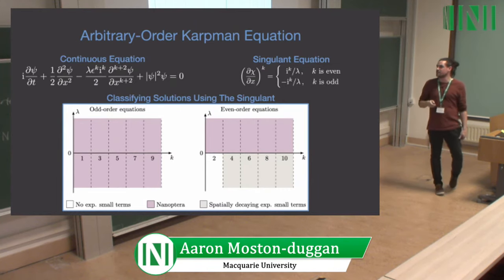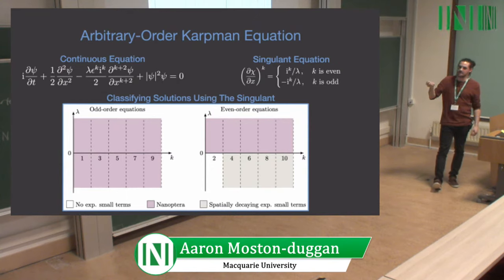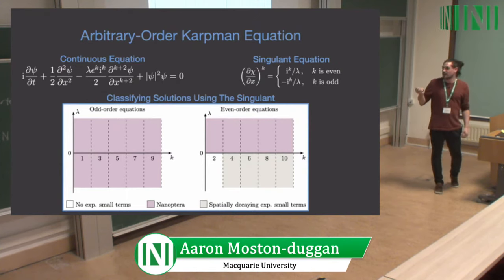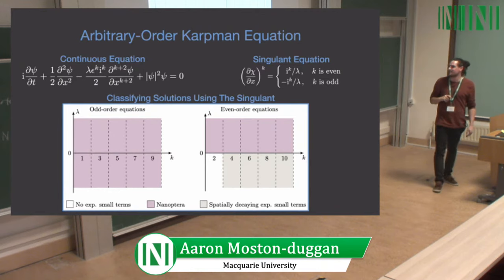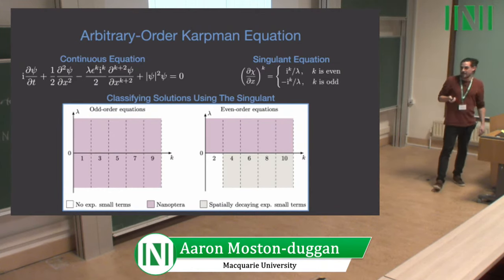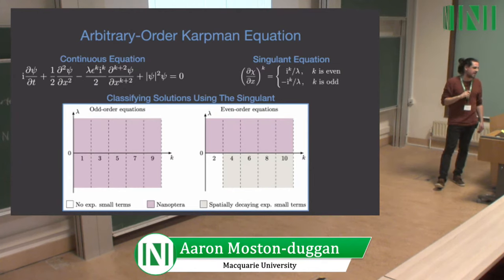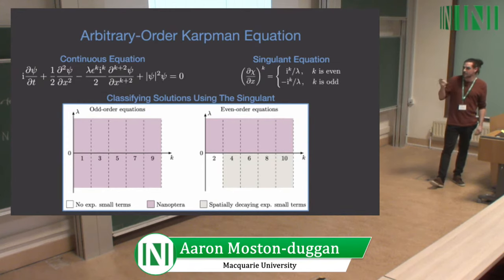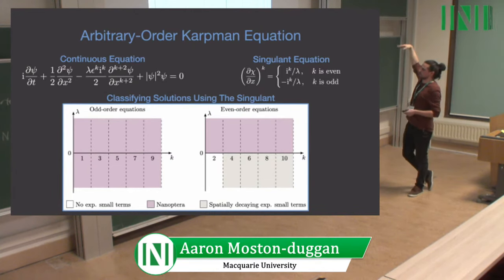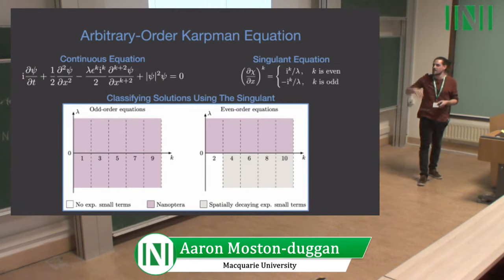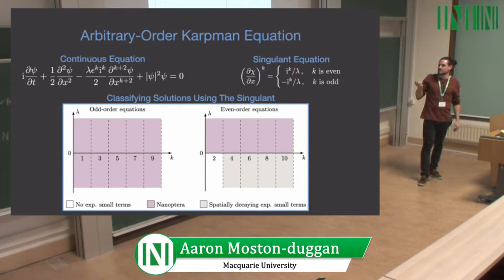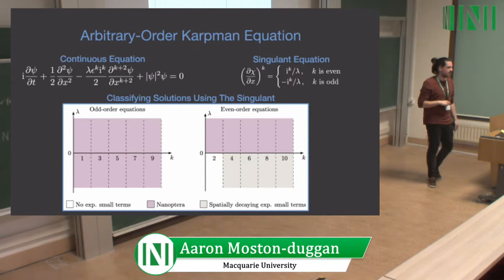In the bifurcation diagram, k is along the horizontal axis as a discrete variable and lambda is on the vertical axis. Pink regions are nanoptera, sand regions are radiatively decaying generalised solitary waves, and white is solitary wave solutions. For even equations, when lambda is greater than zero we get nanoptera and when lambda is less than zero we get exponentially localised solutions. For odd equations, they are always nanoptera regardless of lambda.